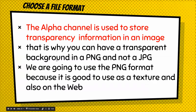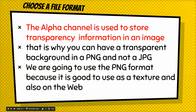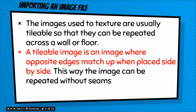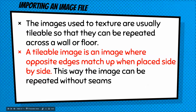Write this down in your notes: the alpha channel is used to store transparency information in an image. That's why you can have a transparent background in a PNG but not a JPEG. For this lesson, we're going to use PNG format. The images used for texturing are usually tileable so that they can be repeated across a wall or floor.